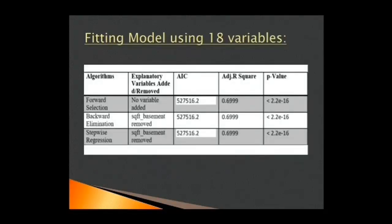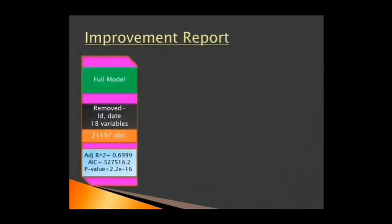Here, AIC is pretty high and adjusted R-square is 0.699, which is not very much favorable, but we still proceed with this model for now.